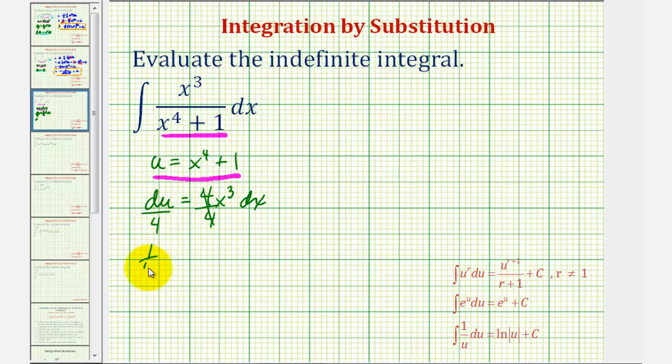Which means one fourth differential u is equal to x to the third dx. So now using this equation, we can perform a substitution for x to the third dx and write this integral in terms of u.